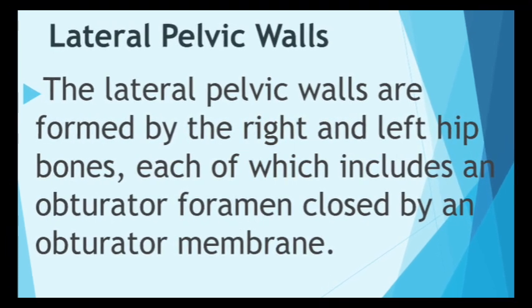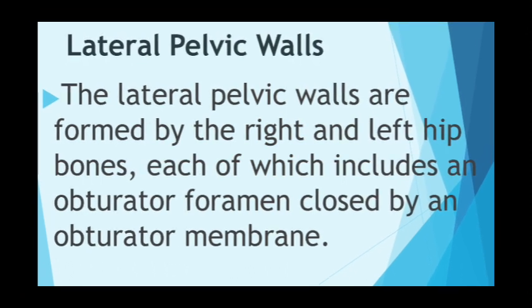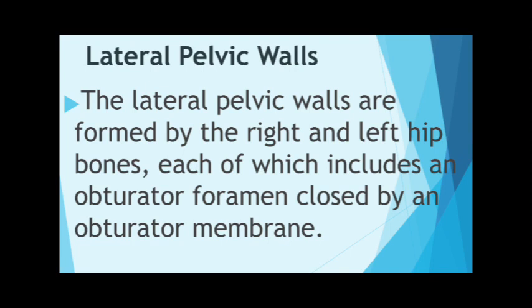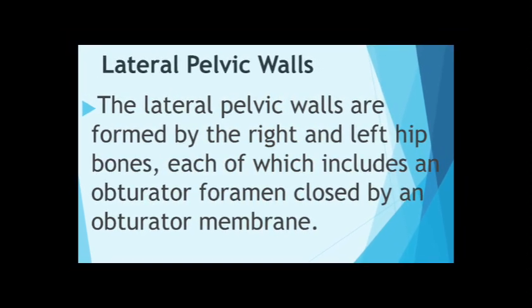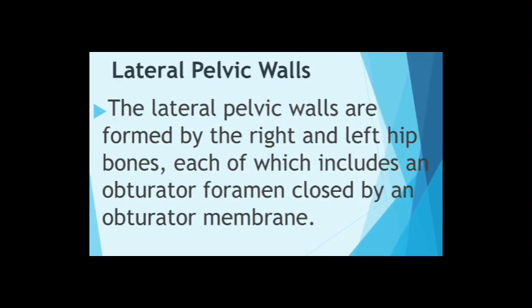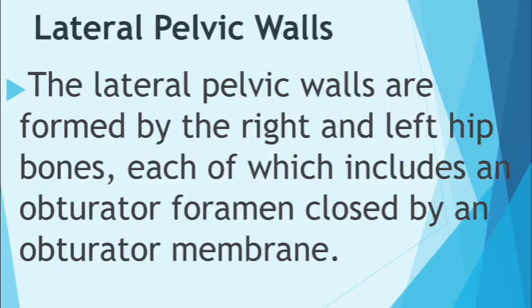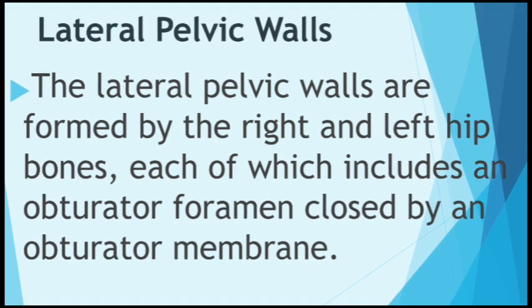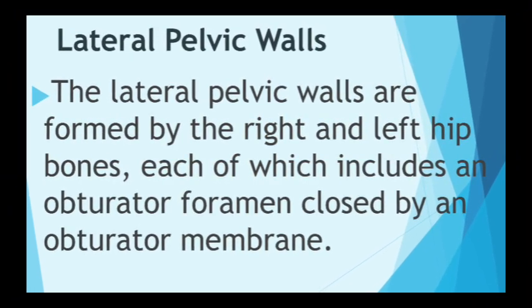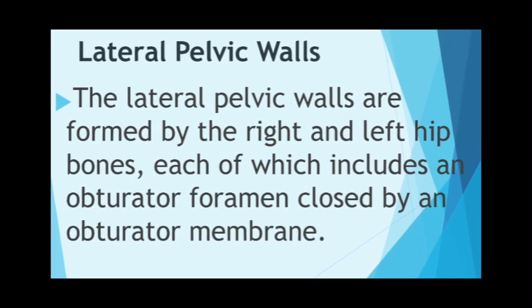The medial surfaces of the obturator internus muscles are covered by obturator fascia, which thickens centrally as a tendinous arc providing attachment for the pelvic diaphragm. The pelvic diaphragm forms the floor of the pelvic cavity and the roof of the perineum, dividing the obturator internus into a superior pelvic portion and an inferior perineal portion. Medial to the pelvic portions of the obturator internus you have the obturator nerves, vessels, and branches of the internal iliac vessels.